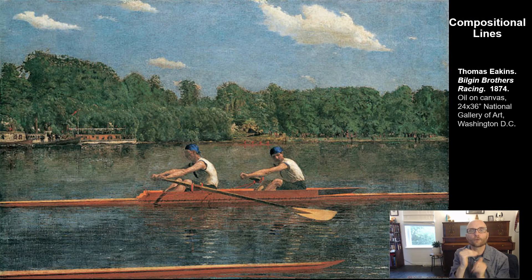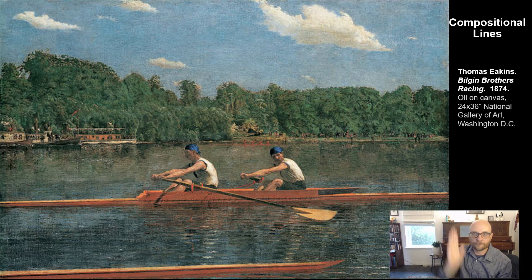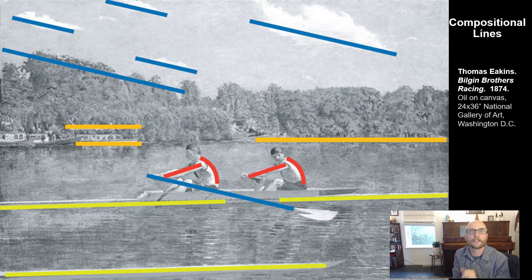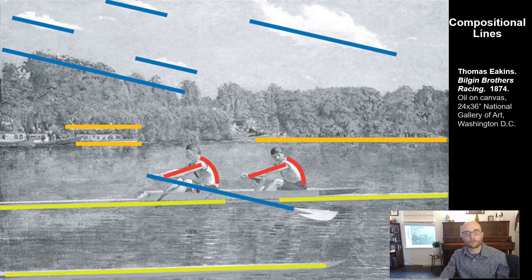Compositional lines form the structure or composition of a work of art — think of them like the two-by-fours in your walls. In this work by Thomas Eakins of the two brothers rowing, we see a series of mostly horizontal lines forming the structure. The whole work is built on these stacked horizontal lines — the figures, the ripples in the water — it's almost like a layered cake. You can literally see the structure of the work of art.